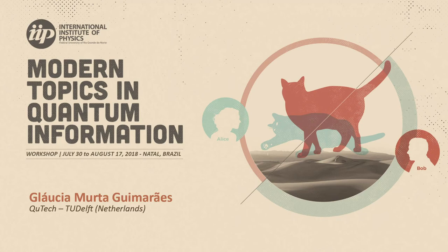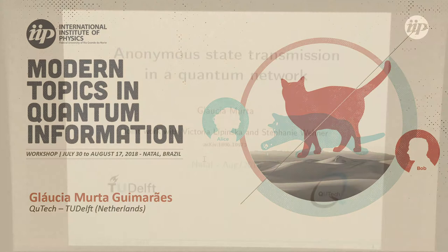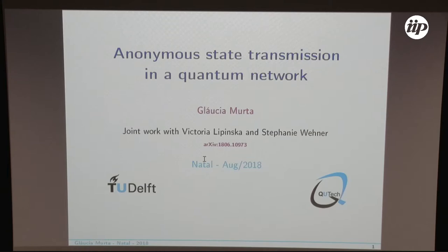I'm going to talk about anonymous state transmission in a quantum network, meaning we are going to analyze a realistic scenario where we have the presence of noise. This is a joint work with Victoria Lipinska and Stephanie Wehner.